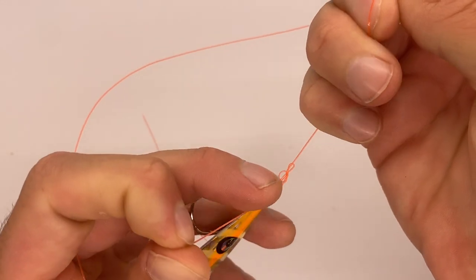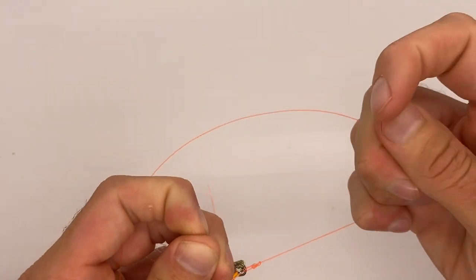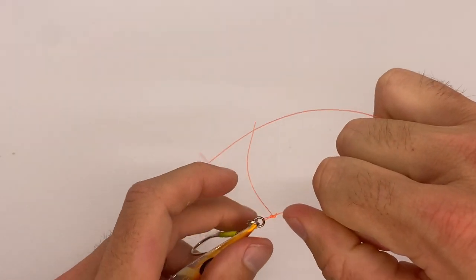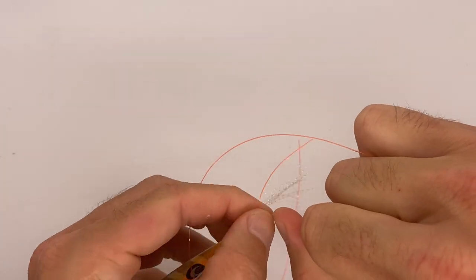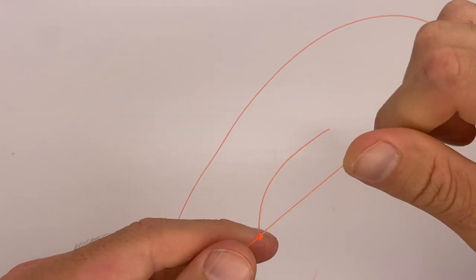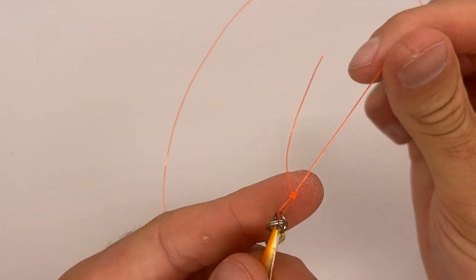Now it's as easy as pulling tight. You want to really test it out. You want to make sure that you tied it well. Put some tension on it. And that's your knot there.